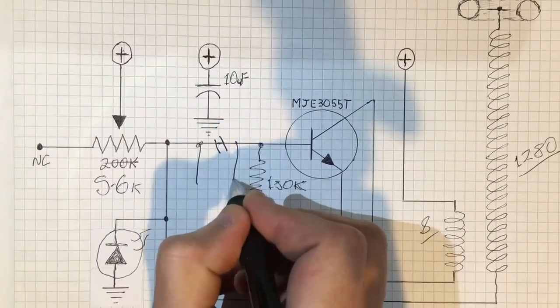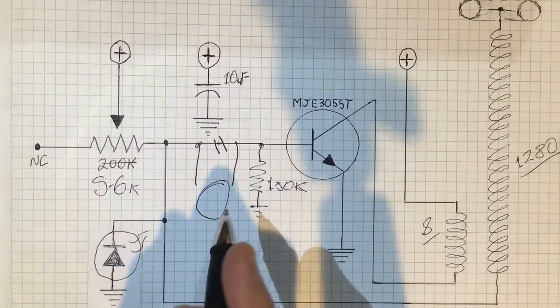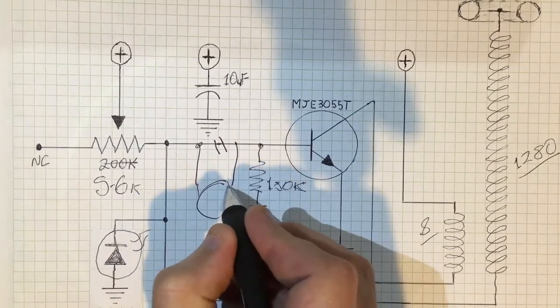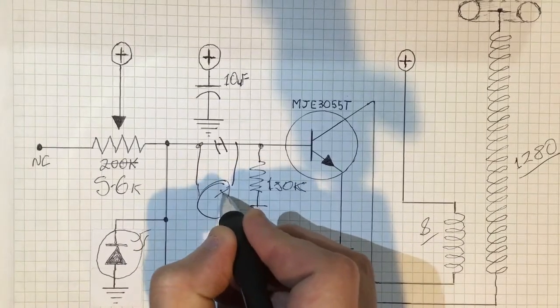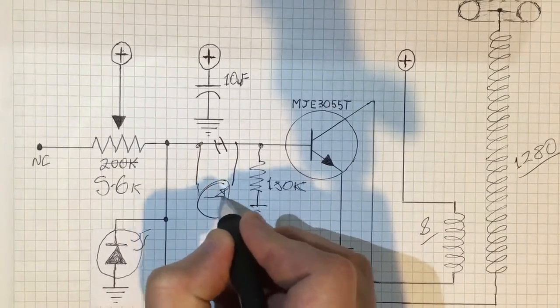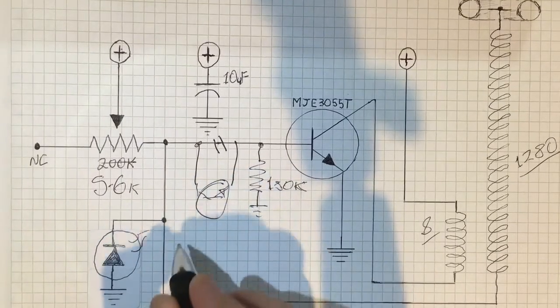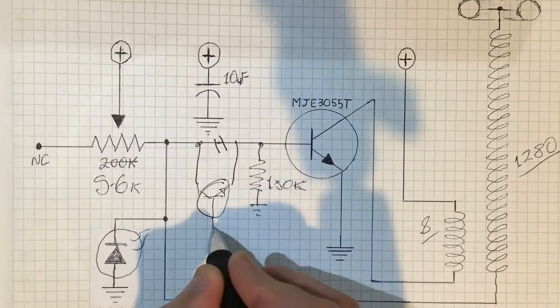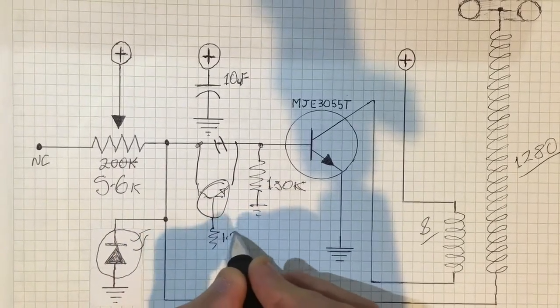And then we've got another transistor, which will be the collector and emitter. Well, it's not going to be your formal drawing, but this is your 2N3904, and your base here. I did add a resistor there, about 1.2K.